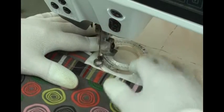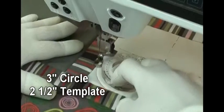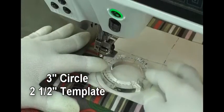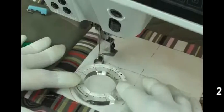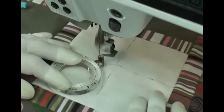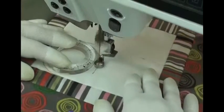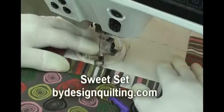I quilt three inch circles using a two and a half inch sweet set template. The template is placed one quarter inch from the edge of the block and from the marking lines so that the needle is one quarter inch from the edge of the template.